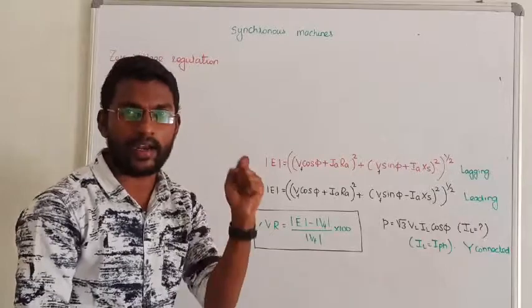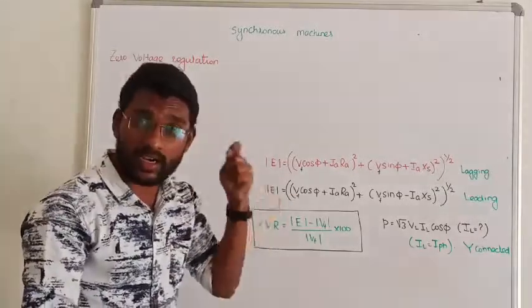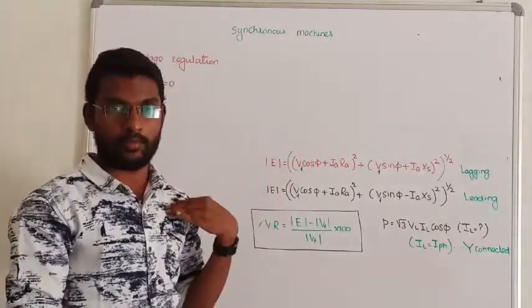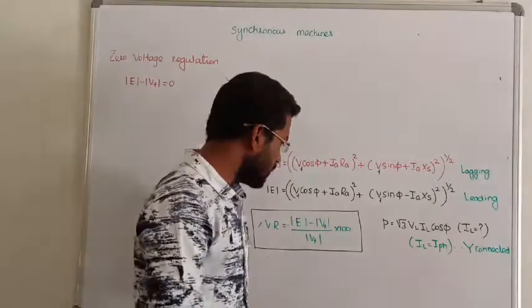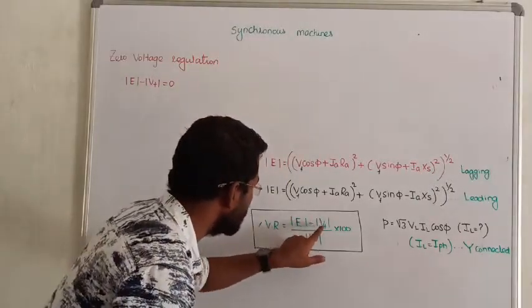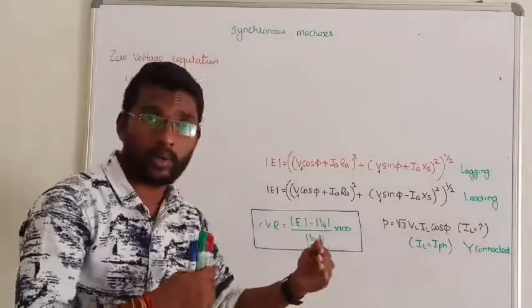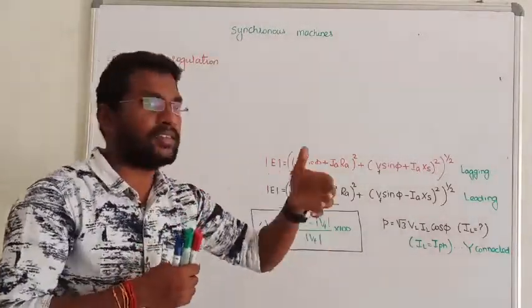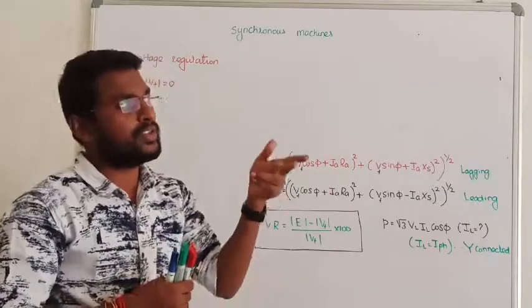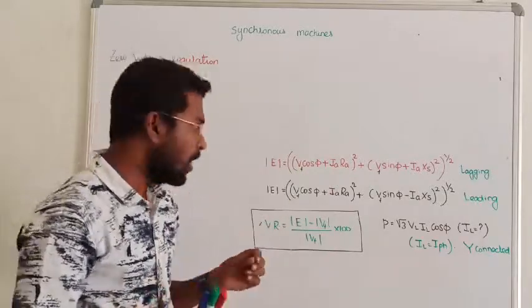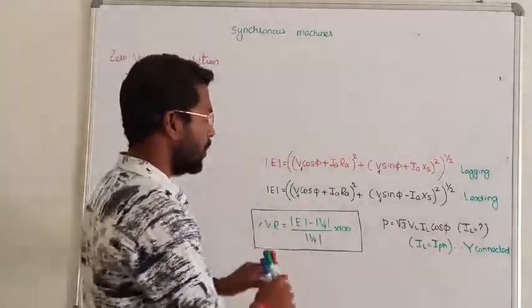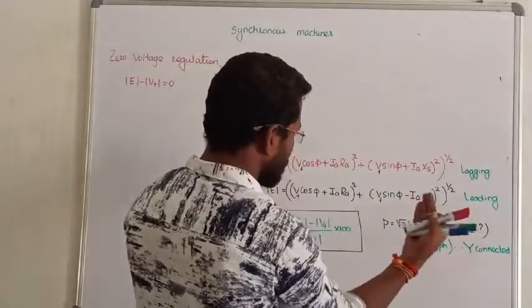For zero voltage regulation, at what power factor? We have to subtract two terms. If the two terms subtract, zero regulation comes. Like 10 minus 10 is zero, not 10 plus 10.